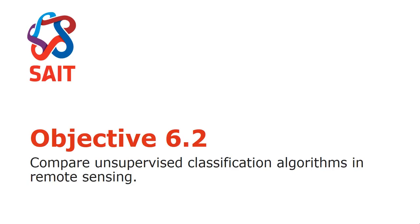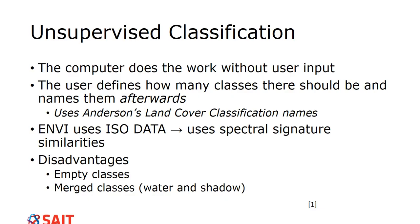This video covers objective 6.2, comparing unsupervised algorithms. Unsupervised classification is the opposite of supervised — the computer does most of the work. Instead of creating training samples, the user just specifies how many classes there are and names them afterward, typically using the Anderson land cover classification naming convention.